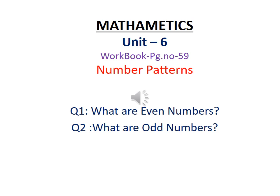So students, can anyone tell me what are even numbers? There are two questions in front of your screen: what are even numbers and what are odd numbers? Even numbers are those numbers which can be grouped into twos without a remainder. And odd numbers are those numbers which can be grouped into twos with a remainder left over.